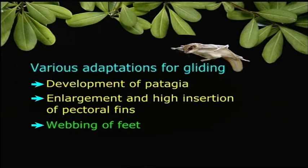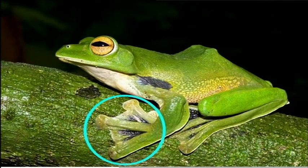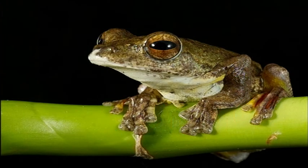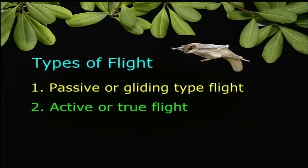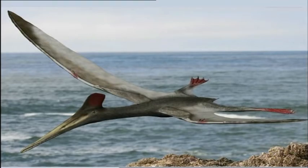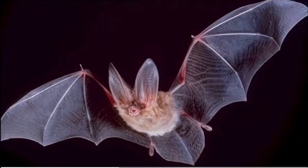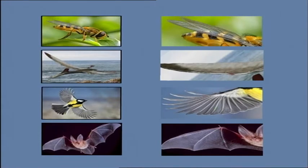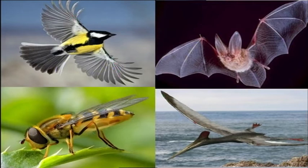Webbing of feet: in the flying frog, the feet are webbed, which sustains prolonged leaps. Flying frog's digits terminate in adhesive pads which help in adhesion to trees. Active or true flight is the aerial flight caused by the action of wings. True flight is found in insects, pterodactyls, birds, and bats. In all of them, the nature of development and structure of wings are quite different, and their analogy suggests that flight has evolved independently in different groups.